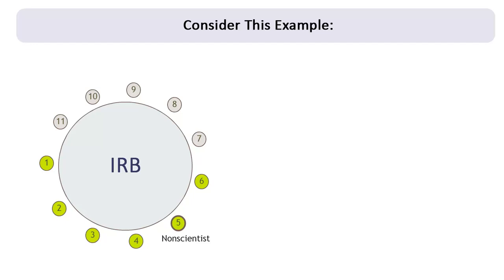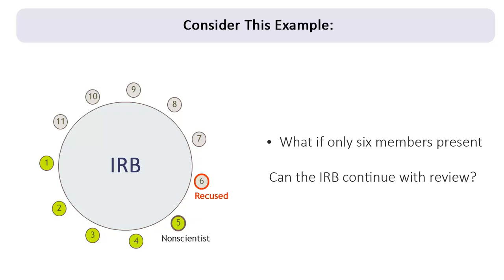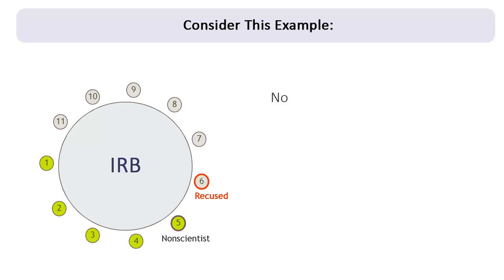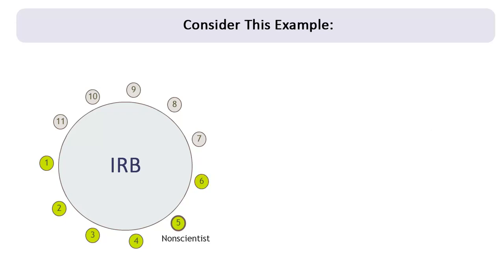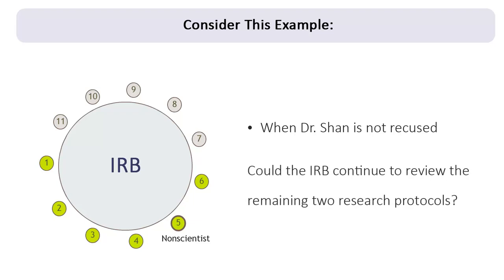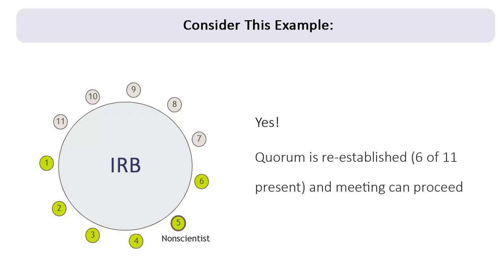Let's consider a slightly different scenario with the same IRB. What if only six of the eleven members had been present at the start of the meeting? Could the IRB proceed with reviewing Dr. Shan's protocol after her recusal? No. The IRB could not continue with the review of this protocol. The quorum would be lost when Dr. Shan recused herself, assuming an alternate was not available to participate in her place. The IRB administrator might propose to move Dr. Shan's protocol to a later meeting—in which case, could the IRB continue to review the remaining two research protocols? Yes, because a quorum would be re-established, since Dr. Shan no longer needs to recuse herself, assuming she has no other conflicts with the remaining protocols.